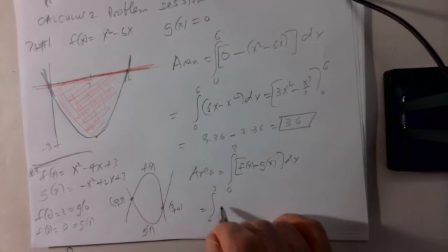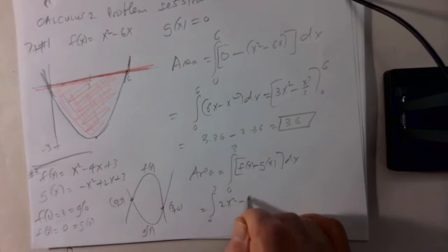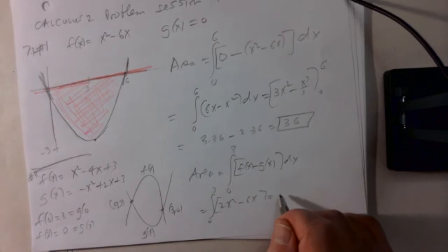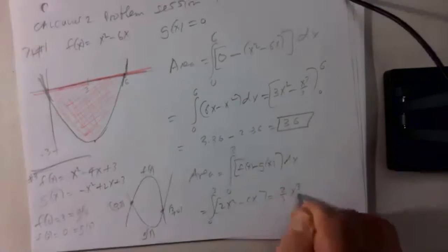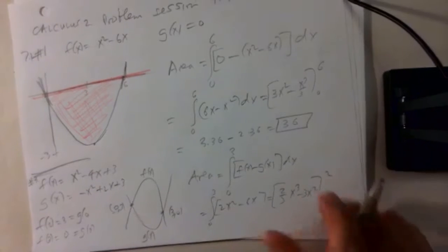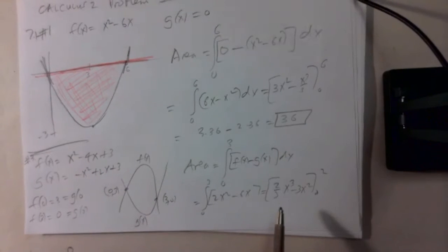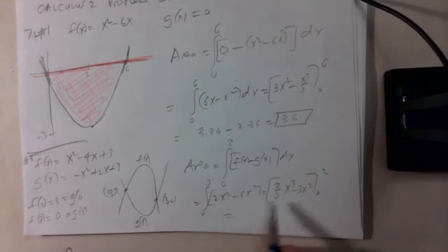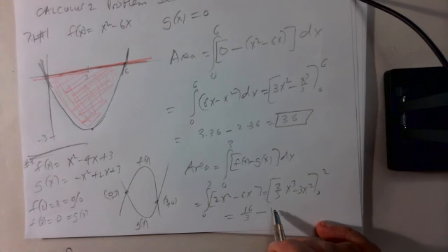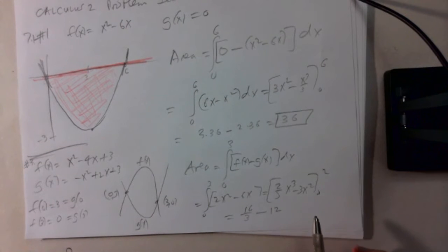So that's the integral from 0 to 3. When you subtract, you get 2x squared minus 6x. This is equal to 2 thirds x cubed minus 3x squared, evaluated from 0 to 2. When x is equal to 2, this is 16 over 3 minus 12.